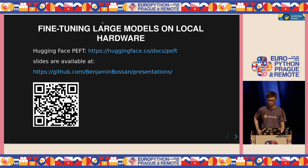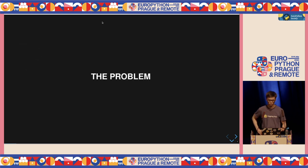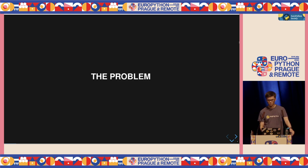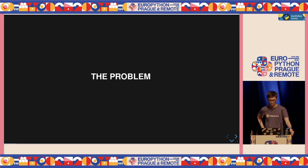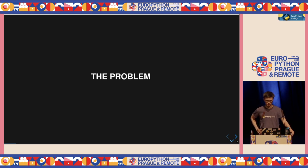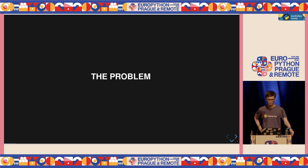I want to start right away with a problem. You've probably all heard about the recent developments in machine learning and AI when it comes to big models. For instance, we've heard about ChatGPT, Gemini, Claude for language modeling, or maybe image generation models like DALL-E, Midjourney, and Stable Diffusion. Now let's assume you have your own data and you want to train those models on your own data because they may not be good enough for the task at hand.